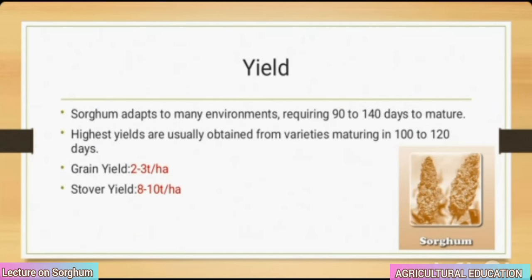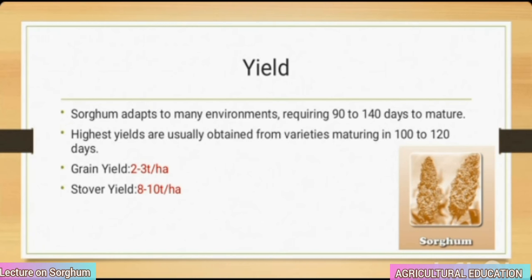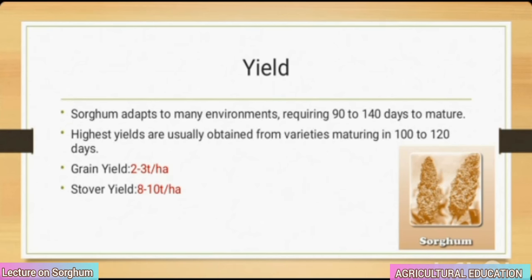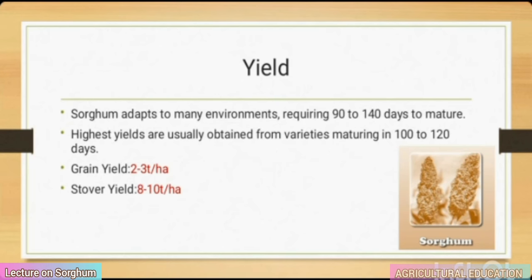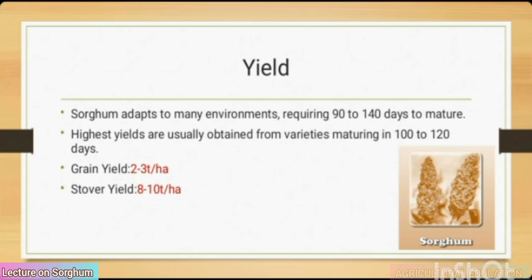Expected yield: sorghum adapts to many environments, requiring 90 to 140 days to mature. Highest yields are usually obtained from varieties maturing in 100 to 120 days. Grain yield: 2–3 tonnes per hectare. Stover yield: 8–10 tonnes per hectare.